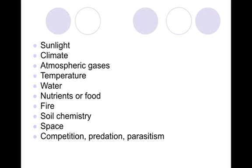So what are some examples of those? We have sunlight, climate, atmospheric gases, temperature which is part of climate, water or precipitation which is also part of climate, nutrients or food for the organisms, fire whether it be natural or man-made, soil composition and what that soil is made of and what kind of life it can sustain, the space that is available, and competition, predation, and parasitism. All of these are limiting factors.